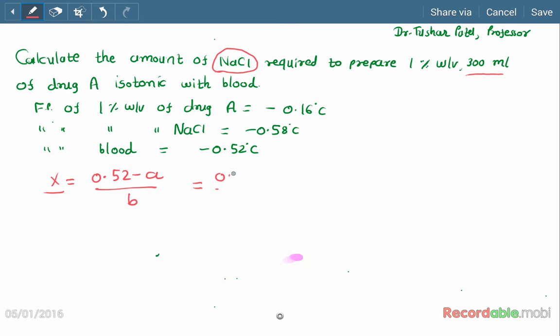X equals 0.52 minus 0.16 divided by 0.58, equals 0.36 divided by 0.58, equals 0.62 grams of sodium chloride per 100 ml.